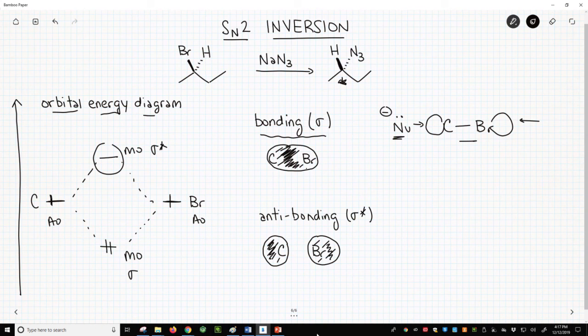The sigma star lobe has 180 degrees separation from the bromine, the leaving group, and that sets up the trajectory of the nucleophile. The nucleophile ends up on the opposite face as where the leaving group was located and the stereocenter is inverted. So the inversion of stereochemistry in an SN2 reaction is driven by the molecular orbitals of the original leaving group.